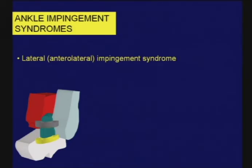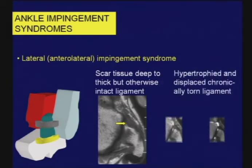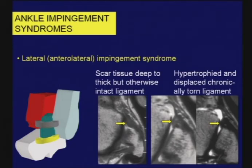I do not think the findings are specific. There was an article by David Rubin indicating that the only true finding of anterolateral impingement was scar tissue deep to a thick but otherwise intact ligament, and that by comparison the finding of a torn ligament interposed between the fibula and talus, although clinically significant, should not be regarded as the pathologic finding indicative of this impingement. Frankly, I'm looking for anything in the anterolateral gutter, whether it be scar tissue or a thickened and displaced chronically torn ligament — I think clinically both could produce impingement.